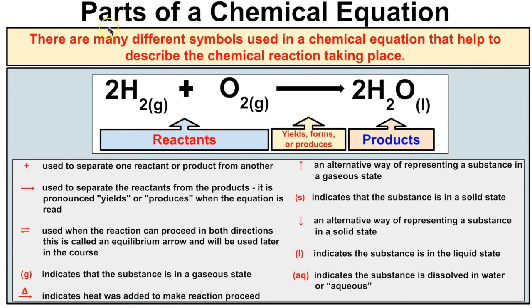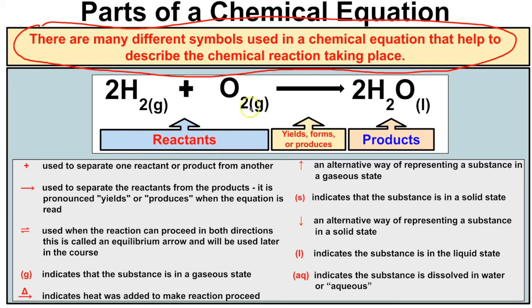There are many different symbols used in a chemical equation that help describe the chemical reaction taking place. We can break a chemical equation into two parts. Everything to the left side of the arrow are called the reactants — those are the things you're starting with, the things that are going to mix together. Everything to the right of the arrow are called the products — this is what's left over after the reactants get done reacting with one another.